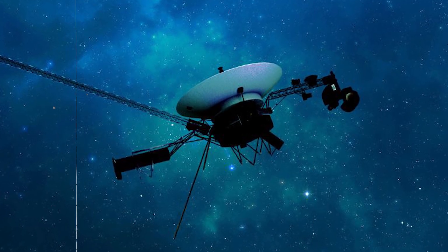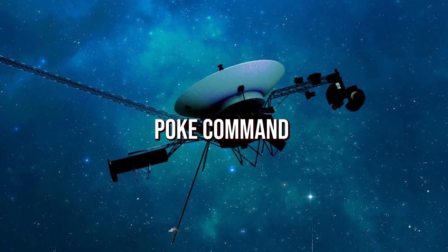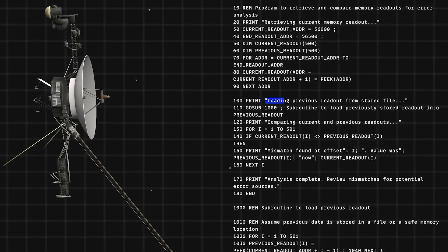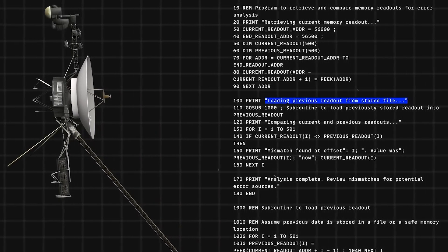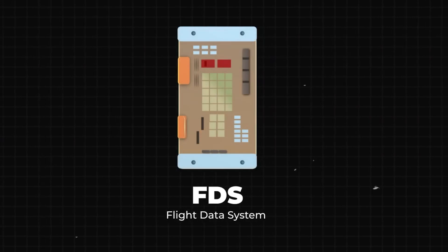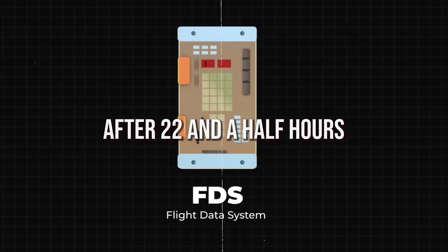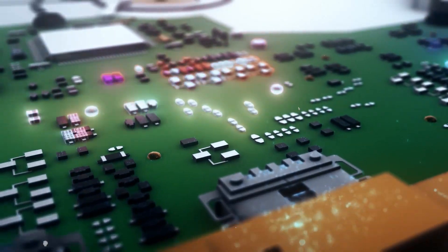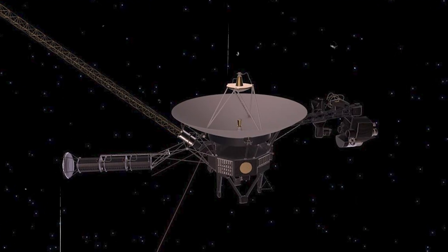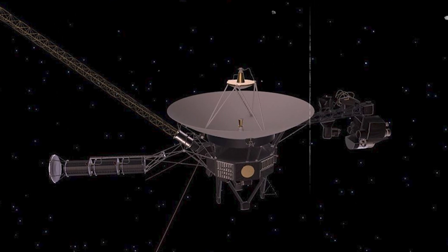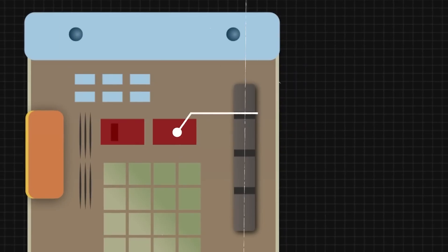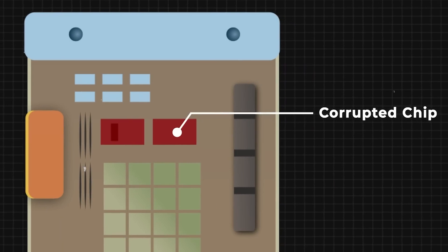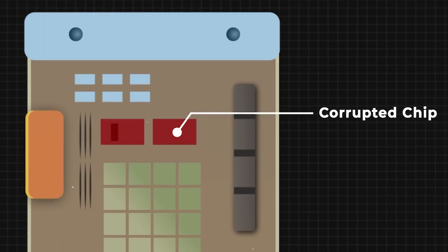Returning to Voyager 1, engineers used the POKE command to direct the system to employ different readout sequences in its software. After 22 and a half hours, they received a response from the FTS and noticed unusual readings. The data seemed incorrectly formatted. Upon thorough analysis, engineers obtained a complete memory readout. By comparing this with a pre-issue readout, the Voyager team identified the corruption source.